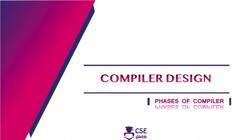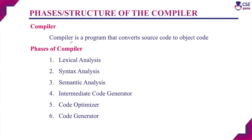Welcome to CSE Guru. In this session we will discuss the phases of a compiler. A compiler is a program that converts the source code in one language to an equivalent machine understandable language called the object code. So the compiler is actually doing a translation process. This translation process is not easily done in a single step — it will be carried out by a sequence of phases of the compiler.